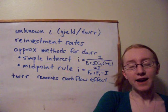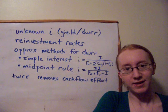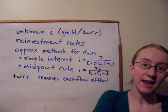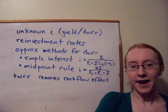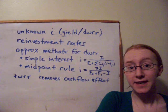And we just get our yield i as 2i over f0, the value at the beginning, plus f1, the value at the end, minus i. So those are the two ways of approximating the dollar rated rate of return for a fund.